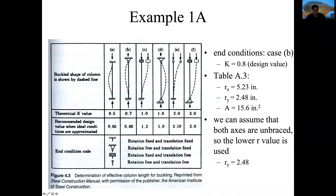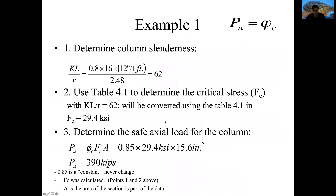To summarize the three steps: first, choose the typical end condition K value, which is 0.80. Second, multiply K × L × 12 divided by the smaller radius to get the slenderness ratio of 62 — K has no units, L and R are both in inches so units cancel. Third, look up 62 in the table to get FC = 29.4, and calculate the safe axial load as 0.85 × 29.4 × 15.6 = 390 kips.